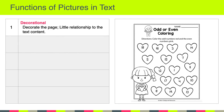One of the functions that pictures can have in text is that of decorational — simply the idea of decorating the page. It has little relationship to the text content. For example, a children's worksheet called 'odd or even coloring' directs students to color odd numbers red and even numbers pink. The hearts and pictures of the children are simply decorational — they have no relationship to odd or even numbers and are simply there to decorate the page.